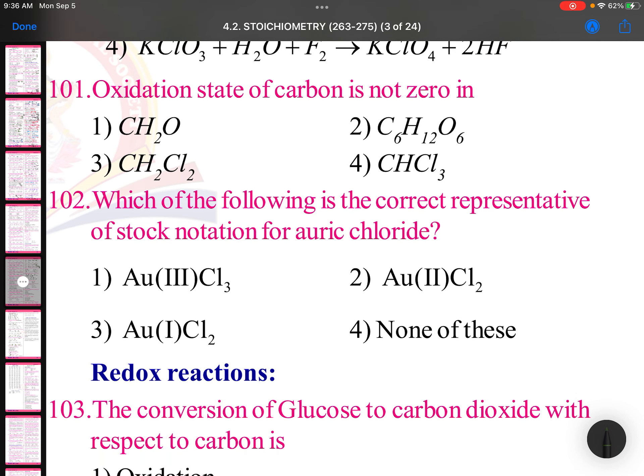Oxidation state of carbon is not zero in: Here it is zero. x plus 2 minus 2 equals zero. Here again same thing. x plus 2 minus 2 equals zero. Here 6x plus 12 minus 12 equals zero. But here it is not zero. x plus 1 minus 3 equals zero. x equals plus 2.